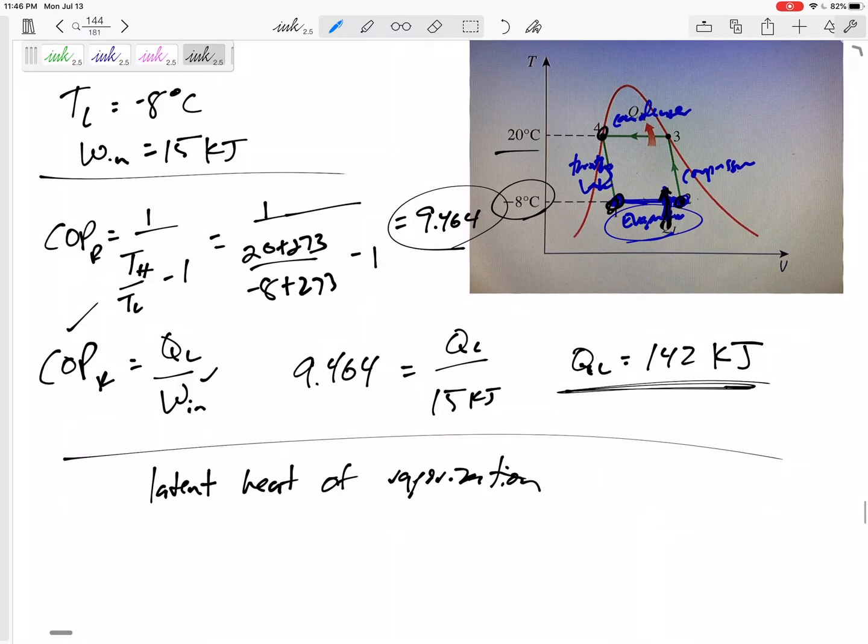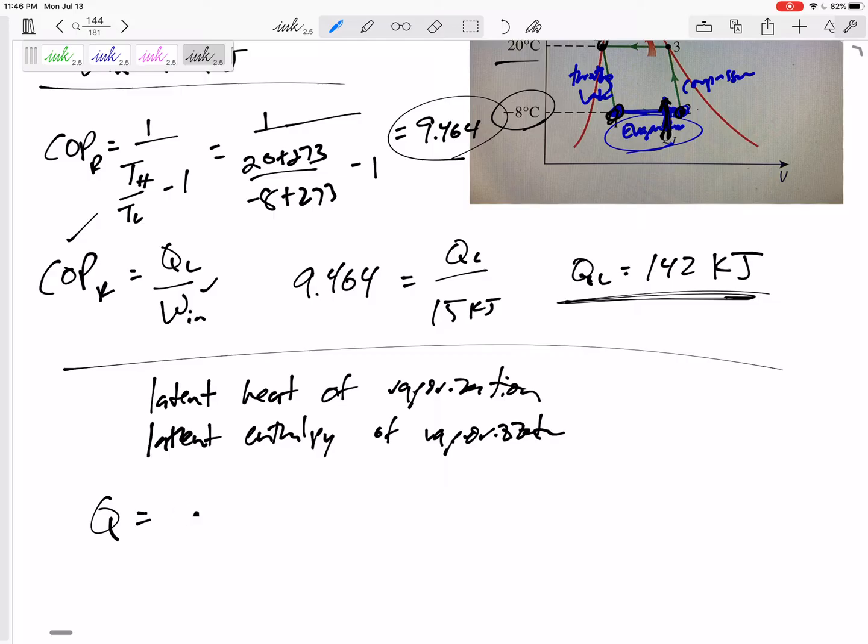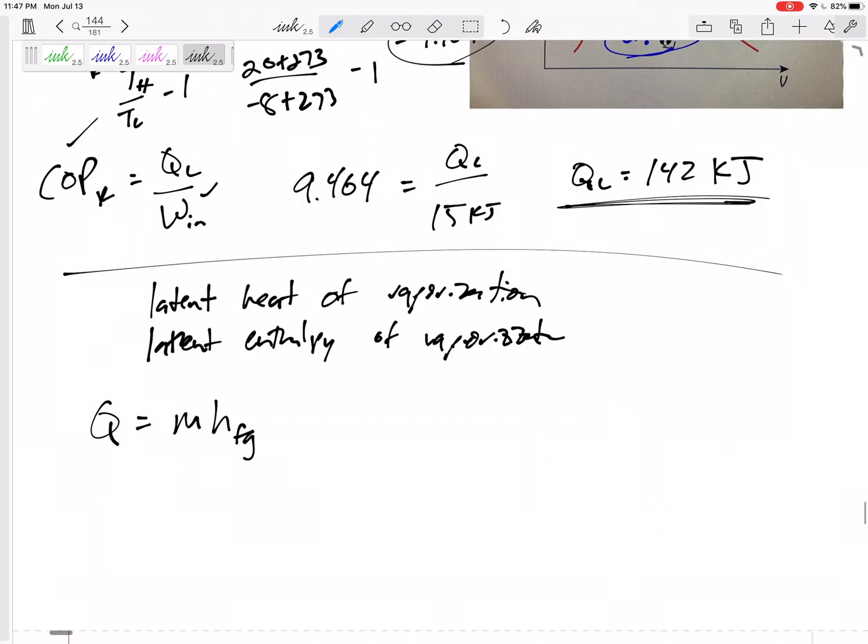The latent enthalpy of vaporization: Q is going to be M times delta H. You can find H1 and H2, or just the mass of the liquid that changes to vapor times the HFG, the change in enthalpy of the vapor and the liquid at that temperature. This is the mass of liquid that vaporizes.